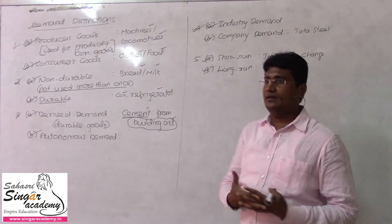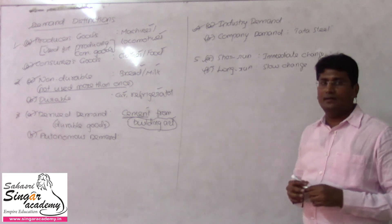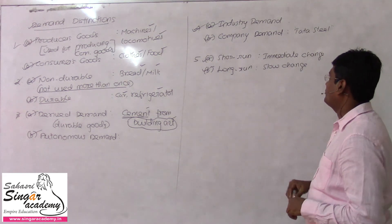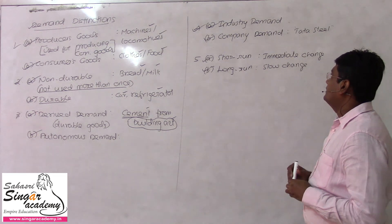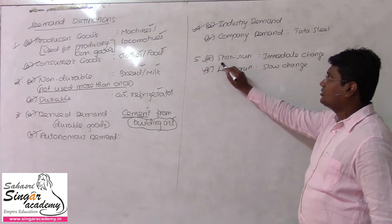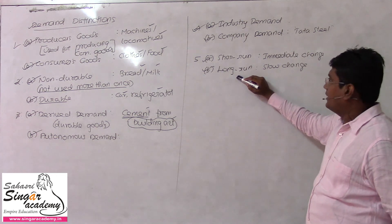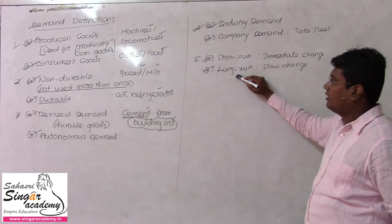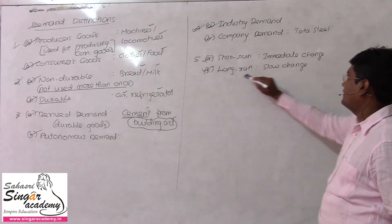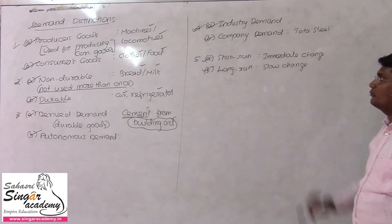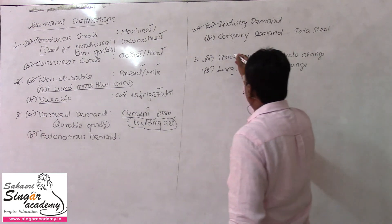In the short run, a price change has an immediate contrary impact. In the long run, the impact is slow to change. So in the short run there is an immediate impact, while in the long run the impact is slow.